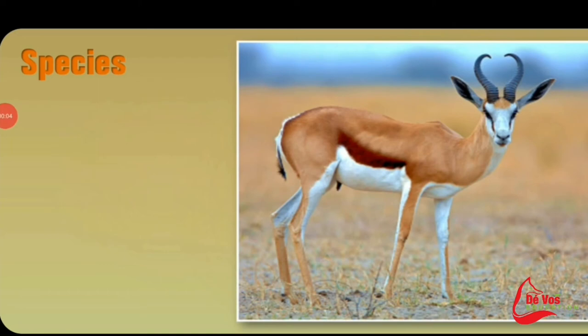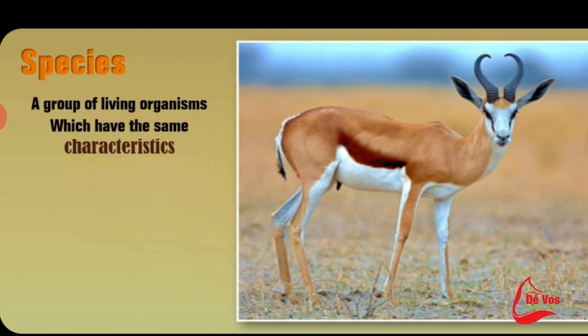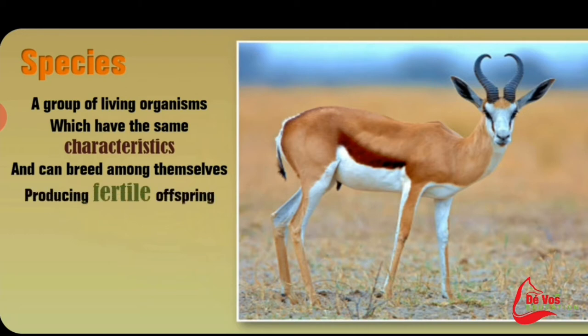An organism is an individual living thing. A species is a group of living organisms which have the same characteristics and can breed amongst themselves to produce fertile offspring.